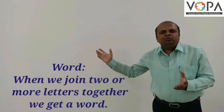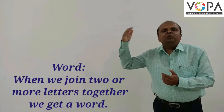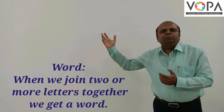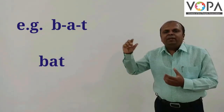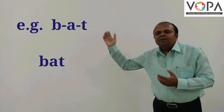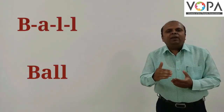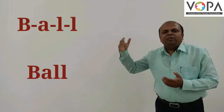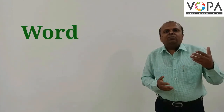When we join two or more letters together, we get a new word, but it should be meaningful. For example, when we join B-A-T, we get new word: bat. Like that, when we join B-A-L-L, we get new word: ball. It is called a word.